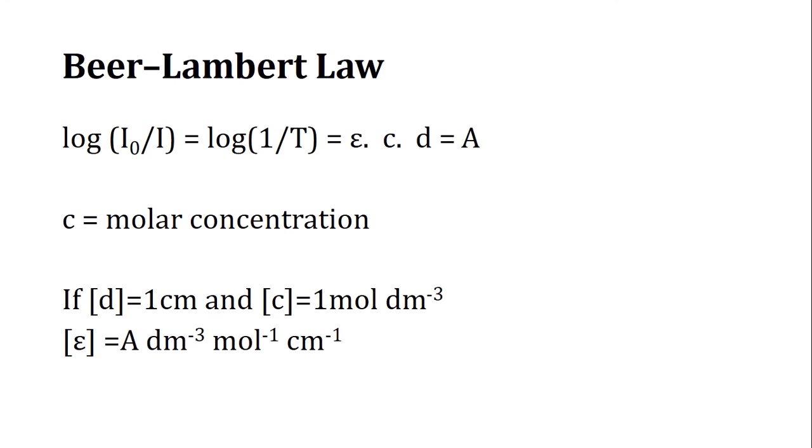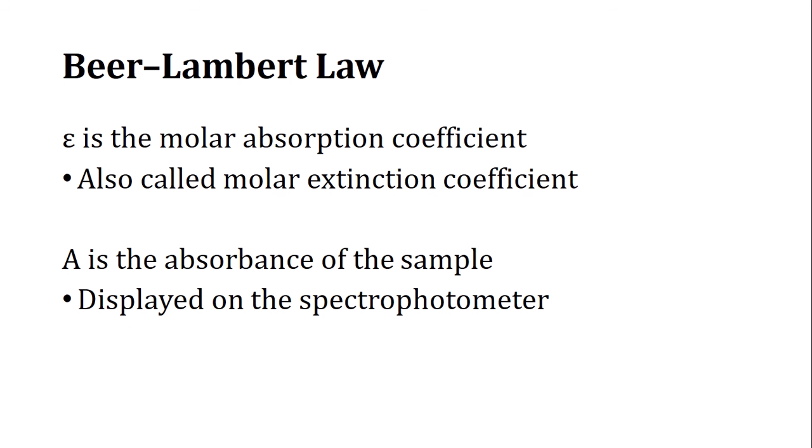The overall unit of epsilon is per molar per centimeter, because we take the inverse — it is per mole per centimeter, overall per molar per centimeter. Epsilon, also called molar absorptivity or molar absorption coefficient, is a constant under standard conditions. A is the absorbance of the sample which you actually read on the spectrophotometer.